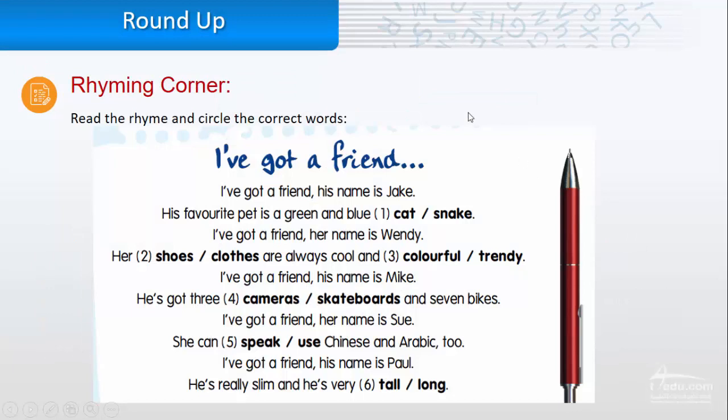Rhyming Corner. Read the rhyme and circle the correct words. I've got a friend. I've got a friend. His name is Jake. His favorite pet is a green and blue snake.